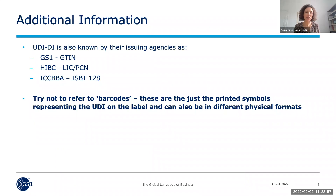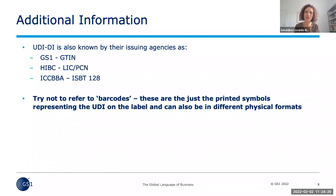The UDI in GS1 terms is called a GTIN — a Global Trade Item Number. But GS1 is not the only issuing agency for unique device identifiers as per global UDI requirements. You also have Hibic with their own version, and ICCBBA related to blood and human tissue devices. What's important is that the shortcut is easy to make — referring to UDI as a barcode — but really the barcode is just the carrier. The important part of the UDI is the identifier itself, which enables you to ensure your device is globally and uniquely identified, both along the supply chain and for use at the point of care.